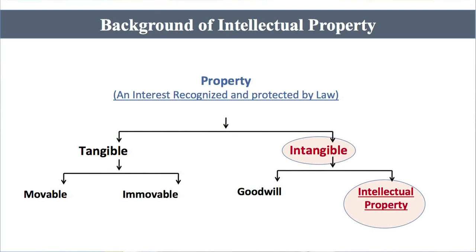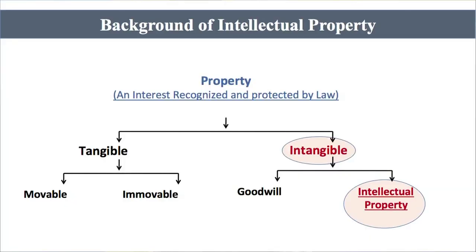When we talk about tangible property, it can be either movable or immovable. Movable such as our automobiles, immovable such as our household. Same way, intangible property can also be of two types: one is goodwill, and the second is intellectual property. In other words, we can say that intellectual property is our intangible property.